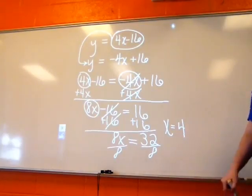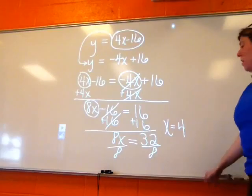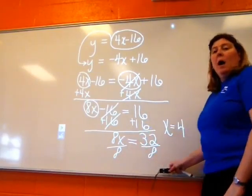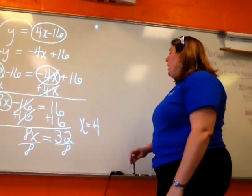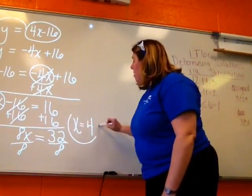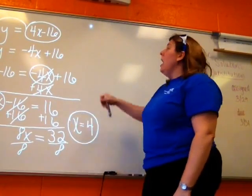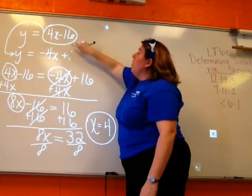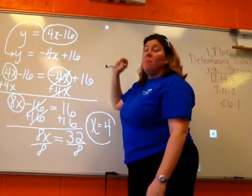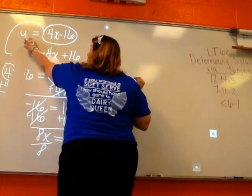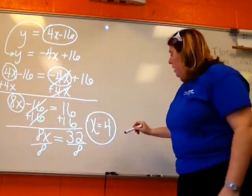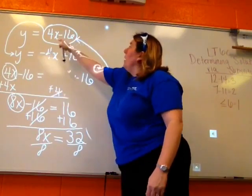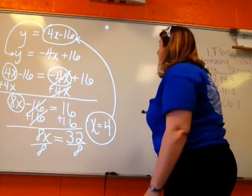And now that I have my X of 4, I can now solve for my Y. So when I get ready to solve for my Y, I'm going to take my X equals 4, and I'm going to replace it into either of these two equations here at the top. It doesn't matter which one I pick. They're both already solved for Y, so I can pick either one. I'm going to pick the top one because it's a positive number and I don't have to deal with my negatives.